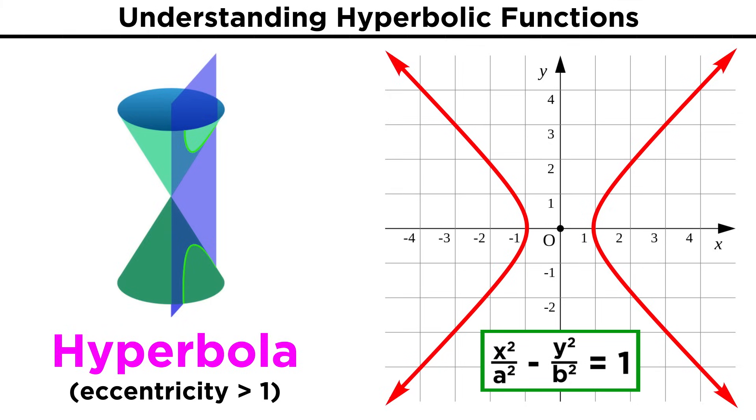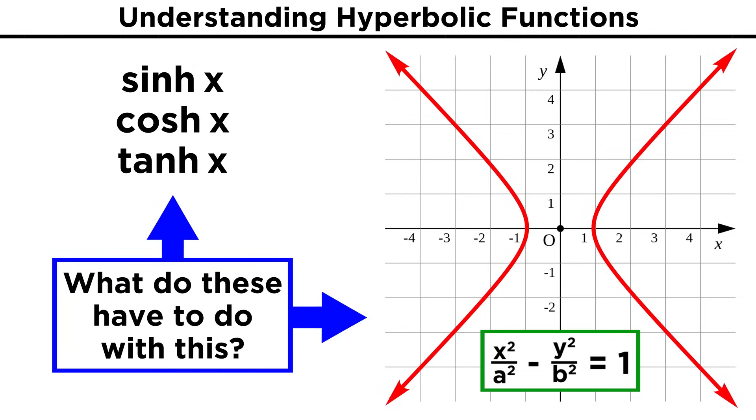Hopefully we remember what a hyperbola is. The hyperbola is one of the conic sections we learned about, the tricky looking one where the cross section goes from the base of one cone through to the base of the other, making a shape kind of like a double parabola. So how do hyperbolic functions relate to the hyperbola?